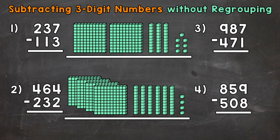Let's jump into number 1, where we have 237 minus 113. For numbers 1 and 2, we're going to use base-10 blocks to help us with these subtraction problems. Using base-10 blocks will help us visualize and better understand subtraction. For number 1, we're starting with 237, and we are subtracting or taking away 113.